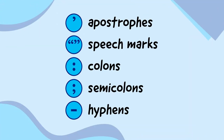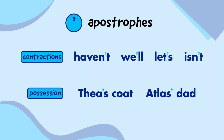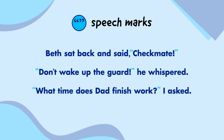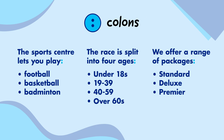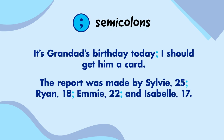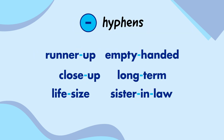Okay, let's quickly remind ourselves of the types of punctuation. Apostrophes are used to show contractions and possession. Speech marks show when someone is talking. Colons begin lists. Semicolons link phrases or short sentences together and separate list items that already use commas. And hyphens link words together to create compound words.